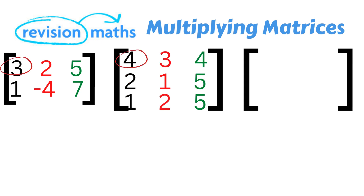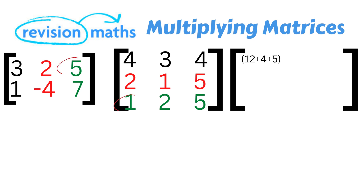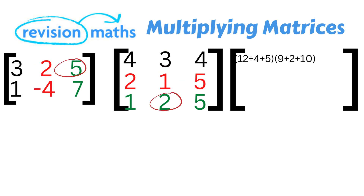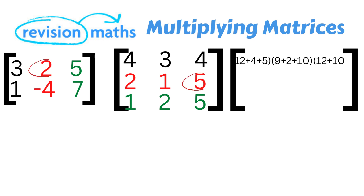We start with the first row of matrix 1 multiplied by column 1 of matrix 2: 3 times 4 gives 12, 2 times 2 gives 4, and 5 times 1 gives 5. Then the first row by column 2: 3 times 3 is 9, 2 times 1 is 2, and 5 times 2 is 10. Then the first row by column 3: 3 times 4 is 12, 2 times 5 is 10, and 5 times 5 is 25.